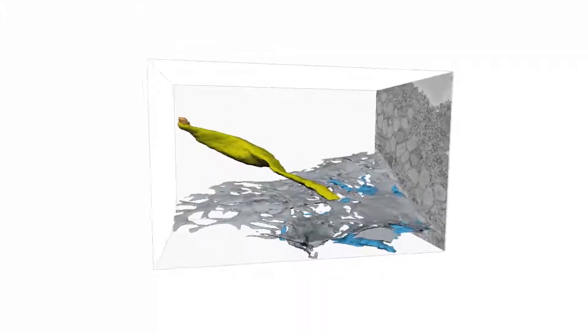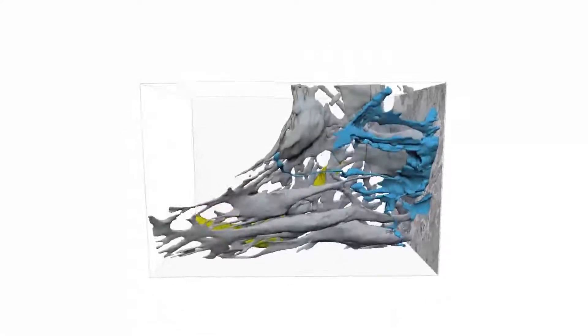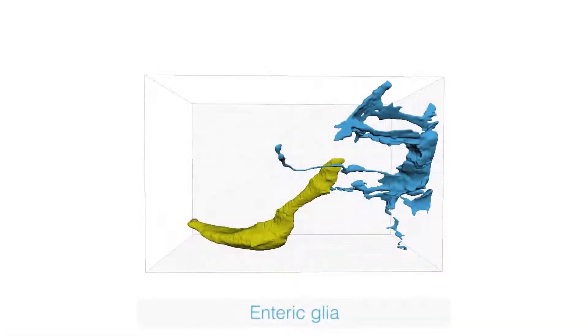These enterendocrine cells, although they are not neurons per se, have several features in common with neurons, including this relationship with enteric glia.